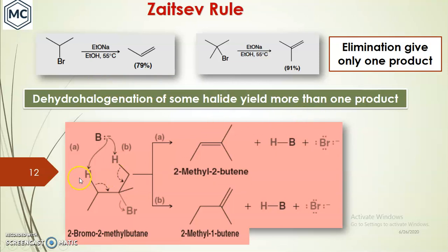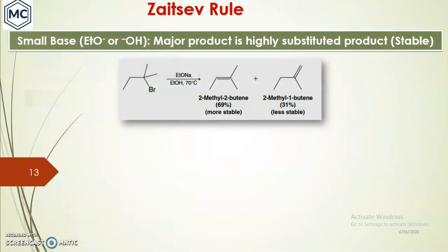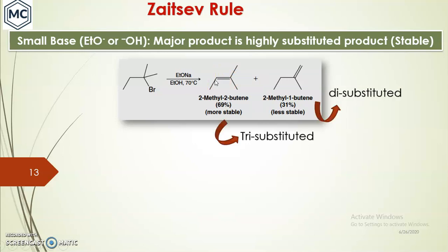But there are some cases where dehydrohalogenation of a halide yields more than one product. For example, 2-bromo-2-methylbutane — you can see that this beta carbon hydrogen is primary and this one is secondary. If hydrogen is removed from the secondary carbon you get this product, and if it is removed from the primary you get this product. So which one will be the major product? In the presence of a small base, the major product will be the highly substituted product.